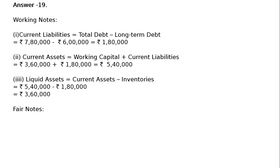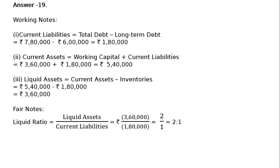Now in the final notes, liquid ratio equals liquid assets upon current liabilities. That is Rs. 3,60,000 upon Rs. 1,80,000. As per the working notes, liquid assets Rs. 3,60,000 and current liabilities Rs. 1,80,000 from step 1. So it is 2 upon 1, that is equal to 2:1, which is your answer.